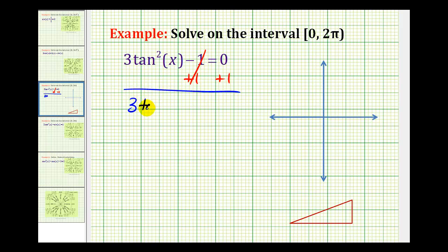So we have 3 tangent squared x equals positive 1, and now we'll divide both sides by 3. So we have tangent squared x equals one third.